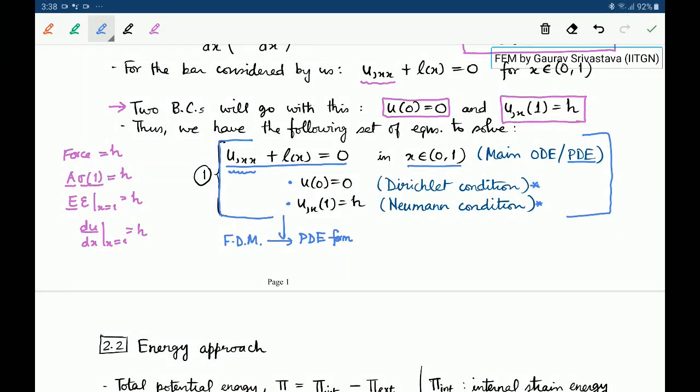This is one of the very common forms which you would have seen. And this is also the so-called strong form. And we will later find out why this is called a strong form. But this is one of the formulations of the bar problem.